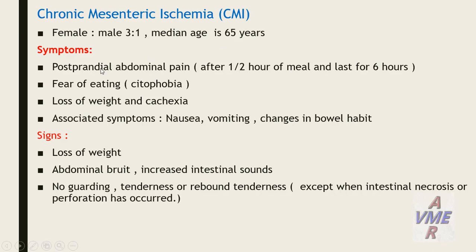Symptoms include post-prandial abdominal pain occurring after half an hour of eating and lasting up to six hours, fear of eating (sitophobia), loss of weight, and cachexia. Associated symptoms are nausea, vomiting, and changes in bowel habit. Signs include loss of weight and abdominal bruit — increased bowel sounds — but no guarding or peritonitis, as this is chronic rather than acute mesenteric ischemia.